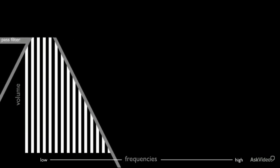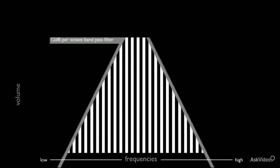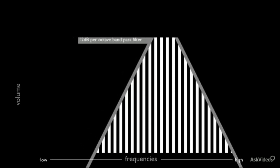The harmonics above the cutoff point of the high pass filter and the harmonics below the cutoff point of the low pass filter define the band of frequencies that are passed.